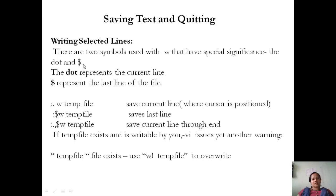Writing selected lines. There are two symbols used with the w that have special significance: the dot and dollar. The dot represents the current line. Dollar represents the last line of the file. Colon dot w temp file saves the current line where the cursor is positioned.